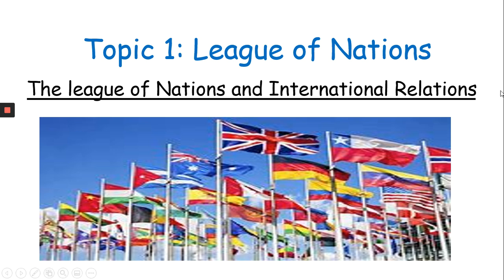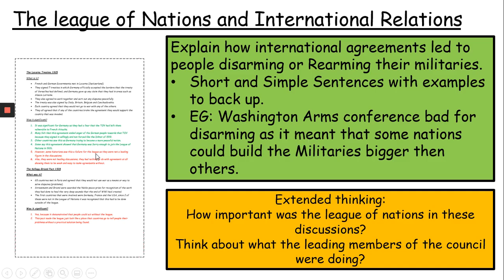Moving into today's lesson, we're going to look at international relations — all that means is how different countries in the world made agreements with each other. Your history teacher should have sent you this sheet on the left hand side. We are going to try and explain how international agreements led to people disarming or rearming their militaries. Disarming means removal of military; rearming means to make your military bigger or stronger. Don't worry if you don't have this sheet — we're going to go through it. What I'd like you to do is jot down these two extended thinking questions, because they're going to really help you build up those strong, higher level answers.